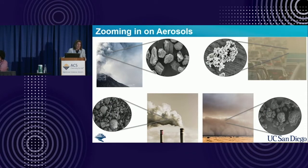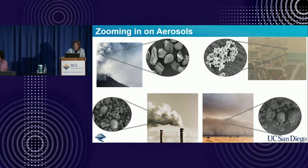If you look around you, they're everywhere—even that little smoke in that Erlenmeyer flask you were showing. These are how we think about them on that scale. We can take these types of microscopy images.